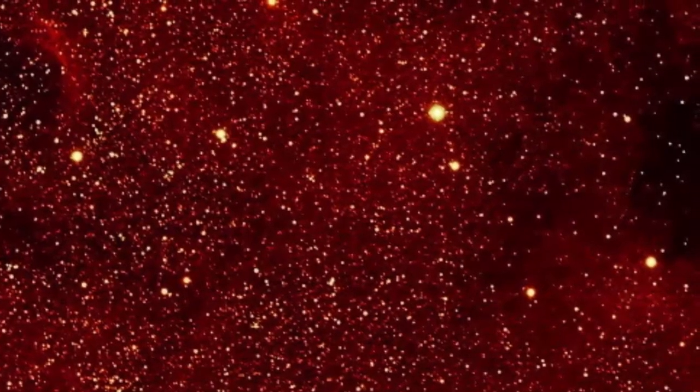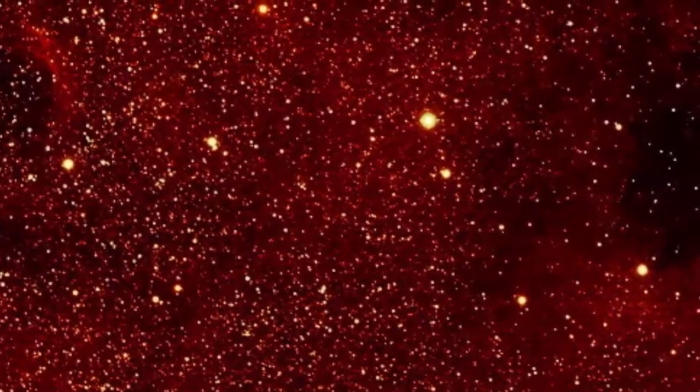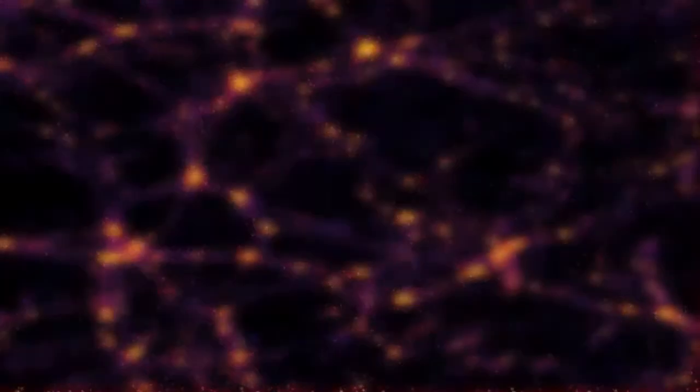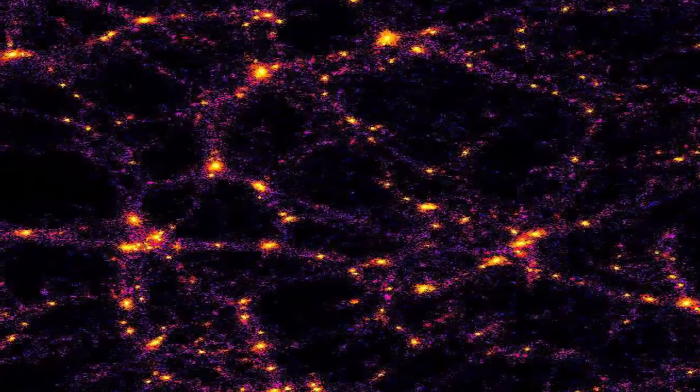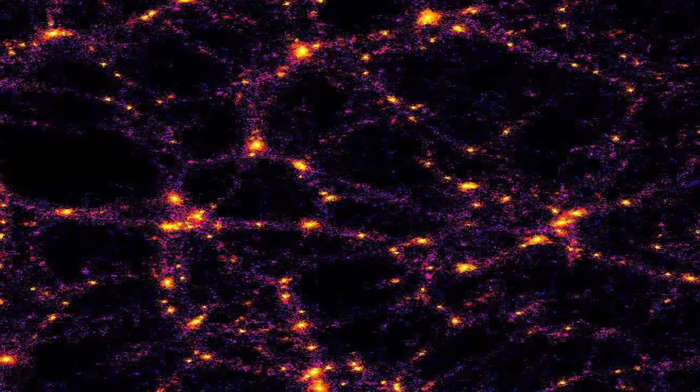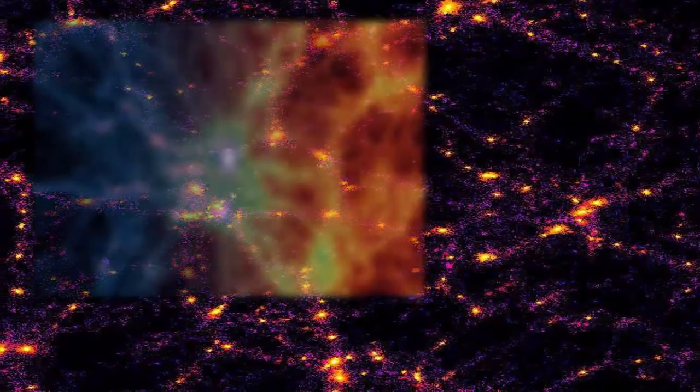The universe, as we observe it, is composed of two fundamental structures that we see repeated throughout infinity. Filaments and voids. These two structures repeat throughout infinity to create what science calls the cosmic web.